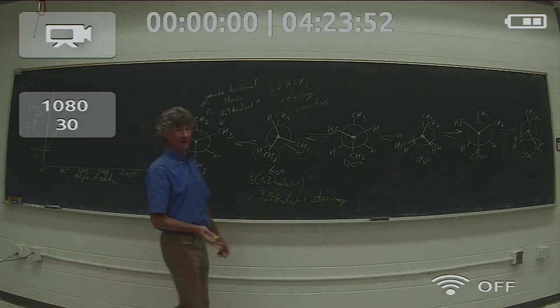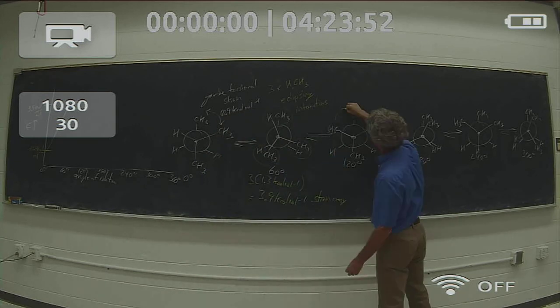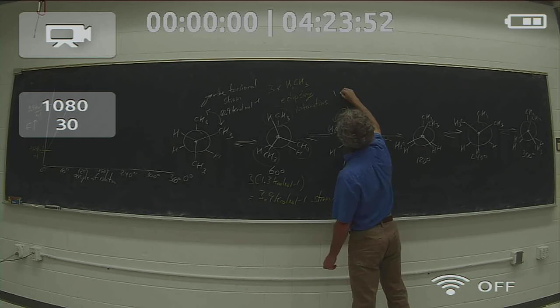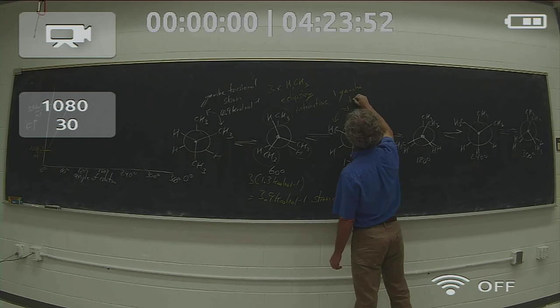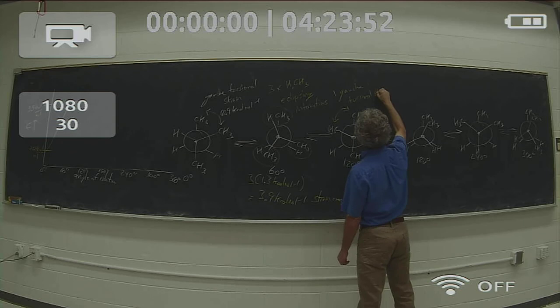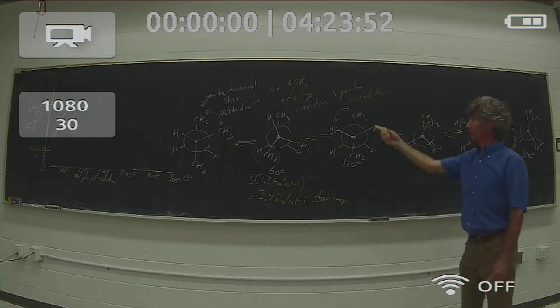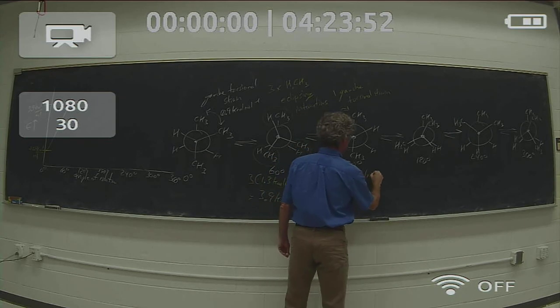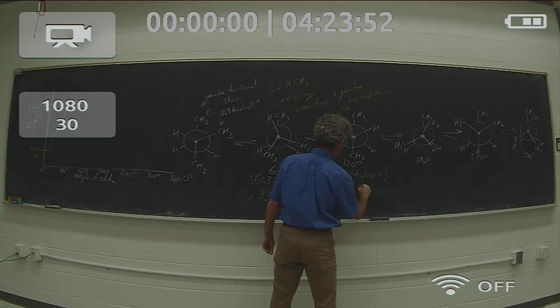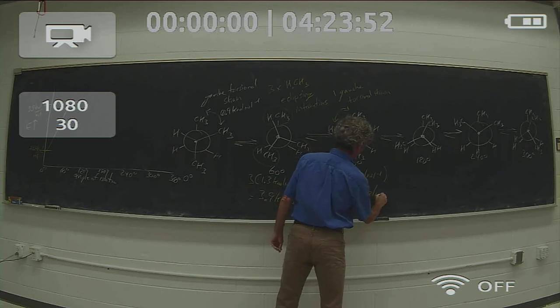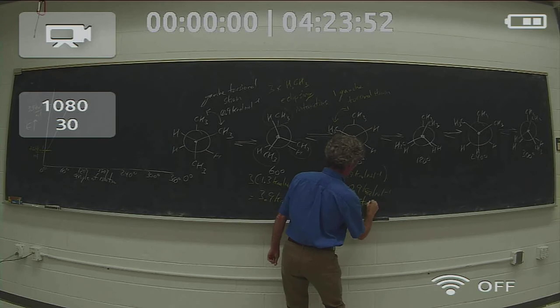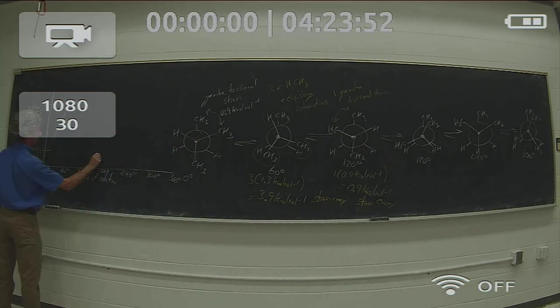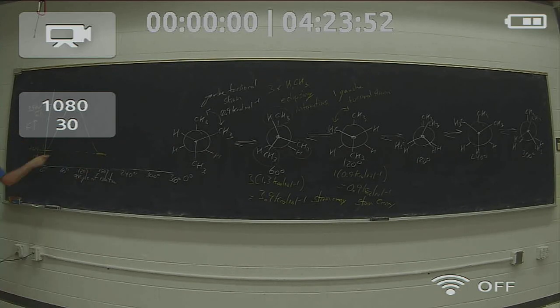Now I want to identify the sources of strain in the 120-degree conformer. What I have is one gauche torsional interaction, which is exactly what I have in the 0-degree conformer. So this is 1 times 0.9 kilocal per mole for a net strain energy of 0.9 kilocal per mole. This is exactly where the 0-degree conformer was, so I'm coming right back down here for the same strain energy, 0.9 kilocal per mole above the hypothetical 0 strain.